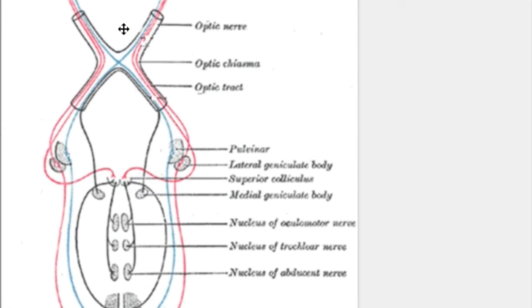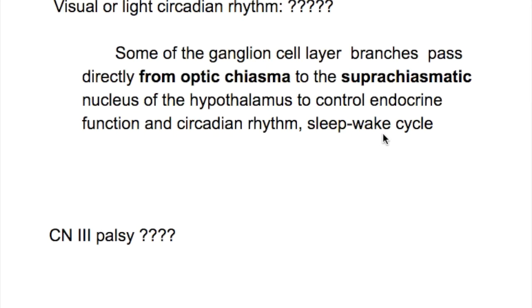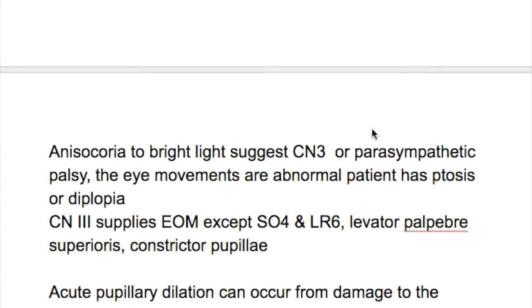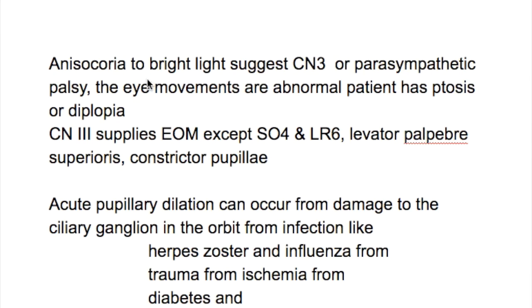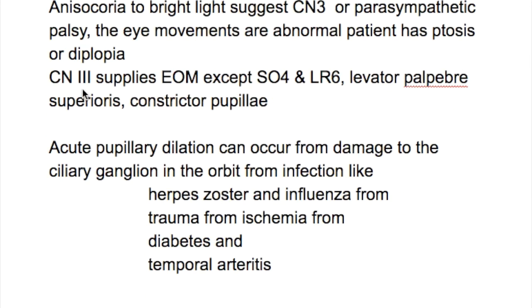What happens if there is a third nerve palsy? Anisocoria to bright light suggests cranial nerve III, oculomotor, or parasympathetic palsy. Eye movements are abnormal; the patient has ptosis or diplopia.